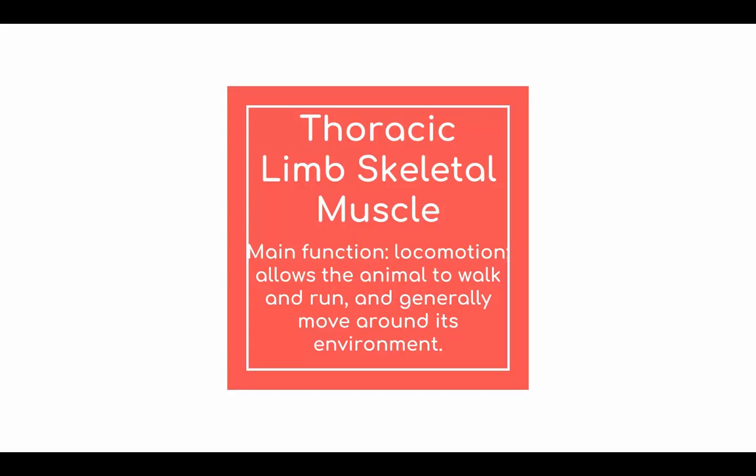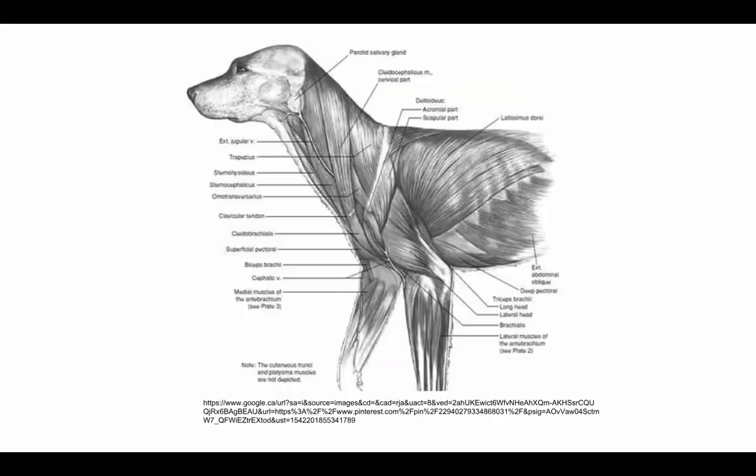Thoracic limb skeletal muscle. Its main function is locomotion, which allows the animal to walk and run, and generally move around its environment.